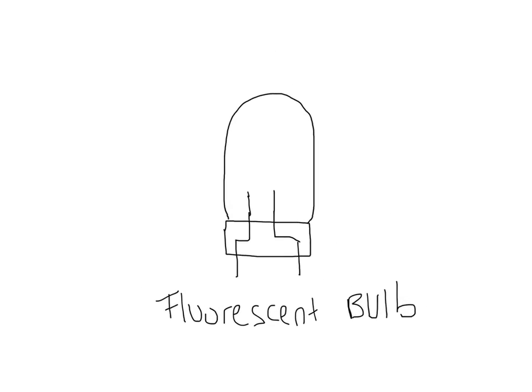The setup is slightly different because inside the fluorescent bulb you have two electrodes instead of a filament, and those are again connected to the national grid. A large potential difference builds up between them, which leads to some of the gas in between becoming ionized, and you get free electrons moving around. Once you've got free electrons you have the potential to cause excitation, as one of the ways you can excite atoms is by collision with an electron.